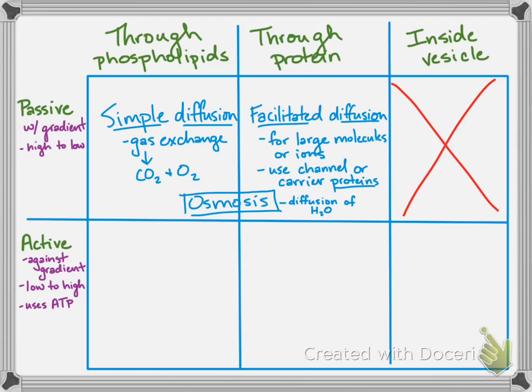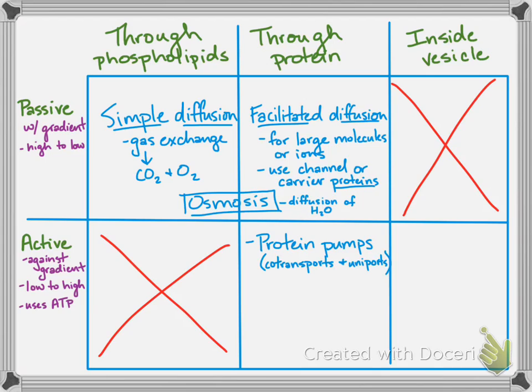Moving on to active transport — with active transport we're not talking about any phospholipid movement, but there is movement through a protein, and those proteins are called protein pumps. These are the co-transporters and uni-transporters. The purpose of active transport is moving things from low to high concentration because they are scarce, or because they're waste and might be slightly toxic to the cell, so you want to get every possible molecule out or in.